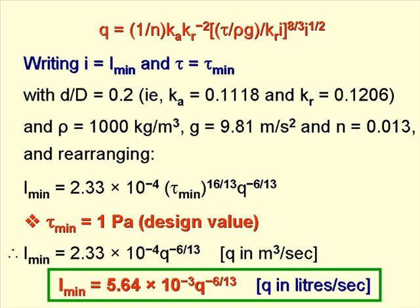Our design value for τ_min is 1 pascal, so i_min is 2.33 times 10 to the minus 4, times q to the power minus 6 divided by 13, where q is in cubic metres per second. For q in litres per second, i_min is equal to 5.64 times 10 to the minus 3, times q to the minus 6 over 13.